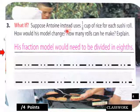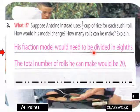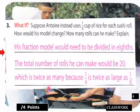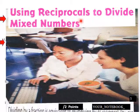What if Anton used one-eighth of a cup for each sushi row? How would this change his model? He would need to divide now by eight. The total number of rows he could make would be 20, because one-eighth is one-half of one-fourth, so he doubles what he had originally — twice as many as with one-quarter.